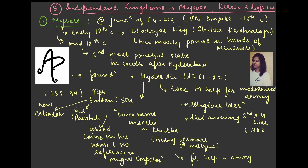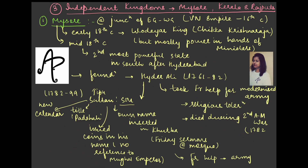So we have Anglo-Mysore, Anglo-Maratha, and Anglo-Sikh wars, which we will cover when we discuss the expansion of the British Empire. Hyder Ali died during the Second Anglo-Mysore War. His son Tipu Sultan is a very famous personality with important contributions to remember for prelims. Firstly, he took the title of Padishah — remember this. Secondly, he issued coins in his own name, with no reference to the Mughal emperor, asserting complete independence.